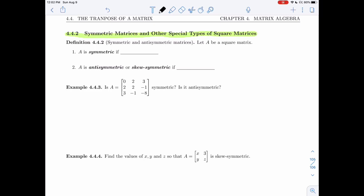All right, so let A be a square matrix. A is going to be called symmetric if the transpose of A is A. It's going to be called antisymmetric or skew-symmetric if the transpose is not exactly A, it's minus A.